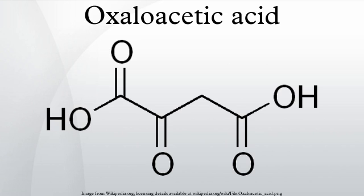Gluconeogenesis is a metabolic pathway consisting of a series of 11 enzyme-catalyzed reactions. It results in the generation of glucose from non-carbohydrate substrates. The beginning of this process takes place in the mitochondrial matrix, where pyruvate molecules are found. A pyruvate molecule undergoes carboxylation by the enzyme pyruvate carboxylase, activated by a molecule each of ATP and water. This reaction results in the formation of oxaloacetate.